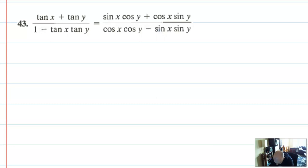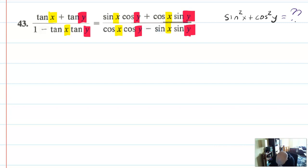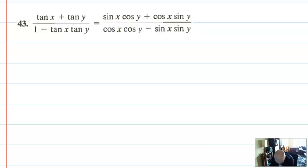Problem 43 is one students always ask me about every year. This is actually a problem proving an identity you'll learn later — when I teach that identity I'll refer back to this. What complicates this problem is that we have both x's and y's. For example, sine squared x plus cosine squared y is not equal to one, because we don't know the relationship between x and y. So the standard identities probably won't work directly, and we need to be a little more strategic.